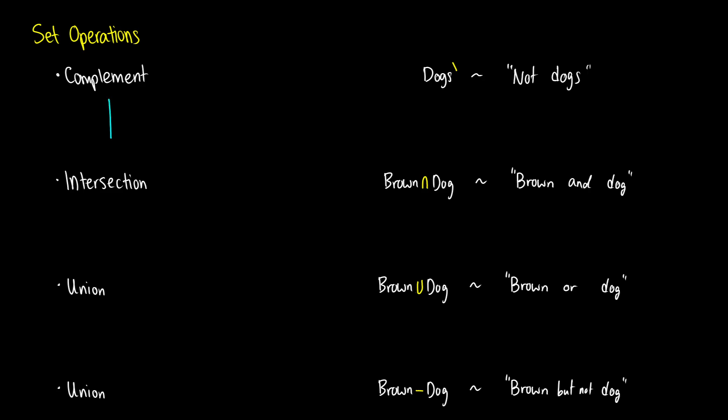The first one is the complement. You can think about having a universe where your set A is there. What the complement does, we do A bar, it just looks at everything outside of that set. In the example, we could think about the complement of dogs. If dogs is everything that is a dog, then the complement of dogs is not dogs. So if I want to talk about all the things that are not dogs, I can just take the complement of dogs.